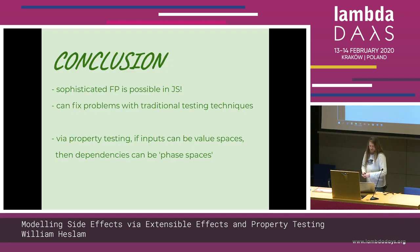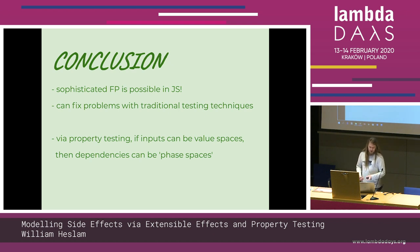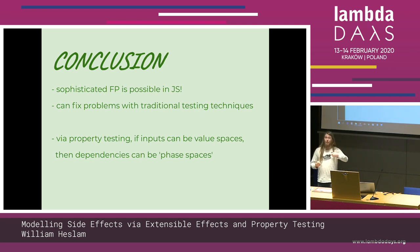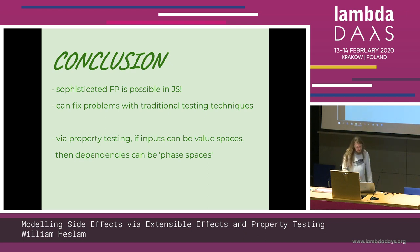We're proving here that no matter what kind of failing database, no matter what kind of API requests we send in, we handle every scenario and our function is robust to a misbehaving database. In conclusion: I wanted to prove that abstract functional programming is possible in JavaScript and can fix traditional problems with mocking or dependency injection. I also wanted to show that property testing, usually used to treat inputs as value spaces, can be extended — we can treat our software's dependencies like databases, queues, even date and time access, as a phase space of all possible failing behaviors. Thank you.